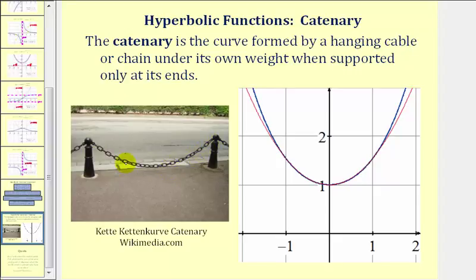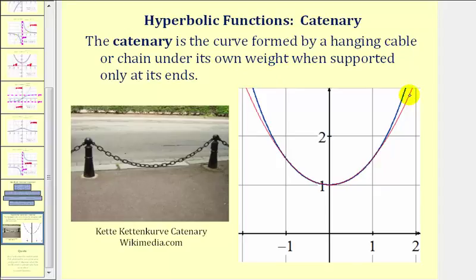So whenever you see a power line or a phone line being supported at two ends, the shape of that graph would be a catenary formed by a hyperbolic function, not formed by a quadratic function. Looking at this graph here, the red graph forms a catenary formed by a hyperbolic function, and the blue graph forms a parabola formed by a quadratic function. So while they are similar, if we have a hanging cable or chain under its own weight, the shape would be the red graph, which is formed by a hyperbolic function.